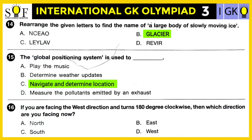Question number sixteen: If you are facing the west direction and turn 180 degrees clockwise, then which direction are you facing now — north, east, south, or west? The correct answer is east. Turning 180 degrees from west makes you face the opposite direction, which is east.